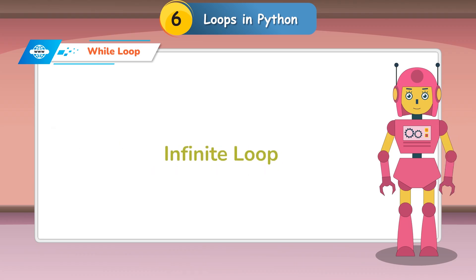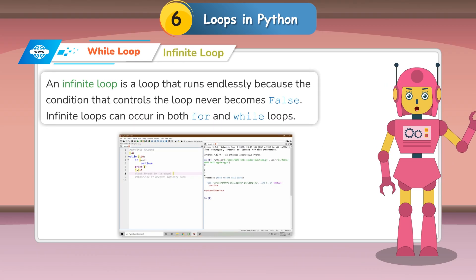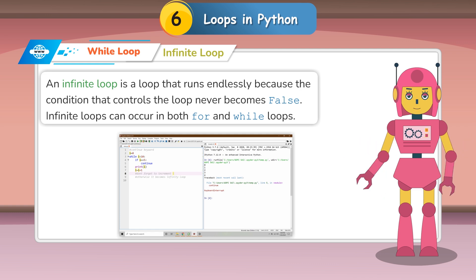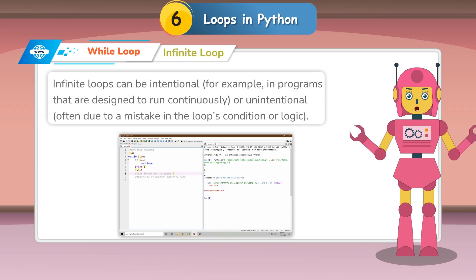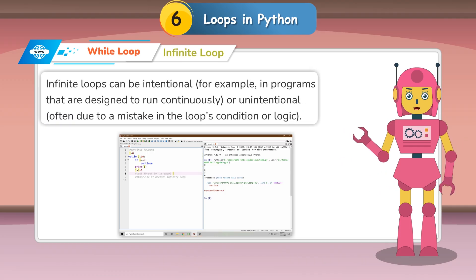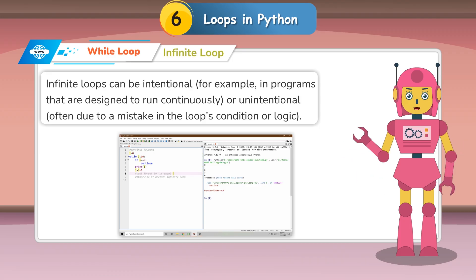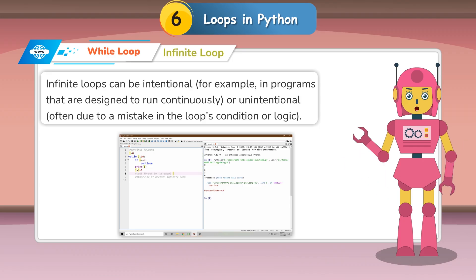An infinite loop is a loop that runs endlessly because the condition that controls the loop never becomes false. Infinite loops can occur in both for and while loops. They can be intentional — for example, in programs designed to run continuously — or unintentional, often due to a mistake in the loop's condition or logic.